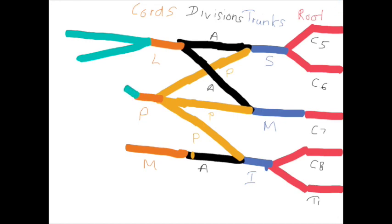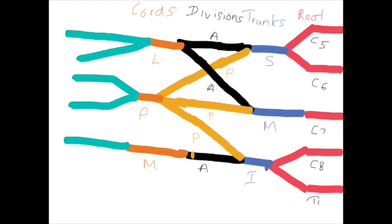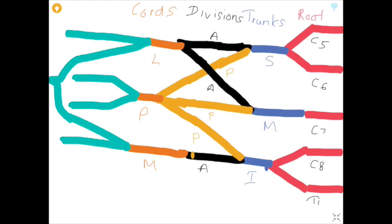From the posterior cord, the axillary nerve and radial nerve are the terminal branches. From the medial cord, the ulnar nerve and the medial root of the median nerve are the terminal branches. The lateral root of the median nerve and the medial root of the median nerve combine and form the median nerve.